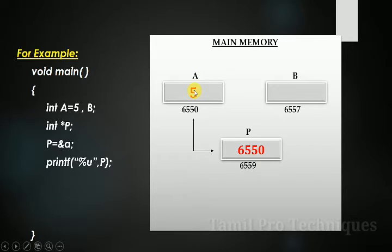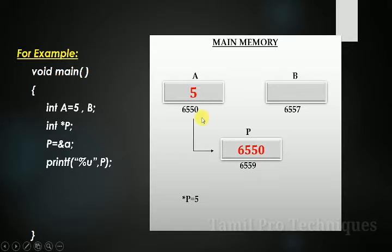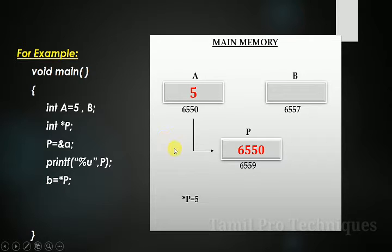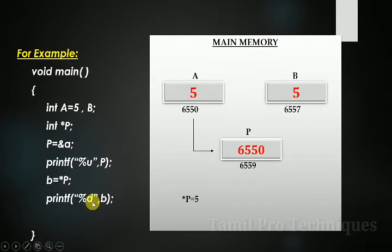If I have a pointer P, we assign pointer P. So we have 5 and assign. Let's print B and we'll print the value 5. Now let's get into the practical program and deliver it.